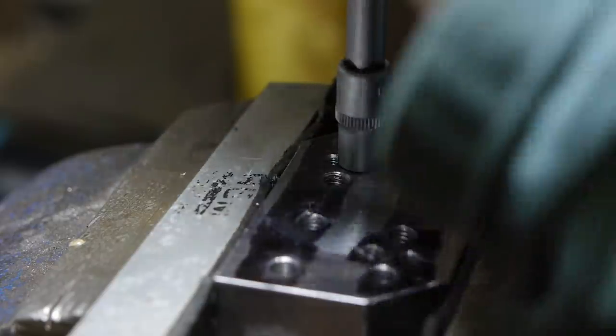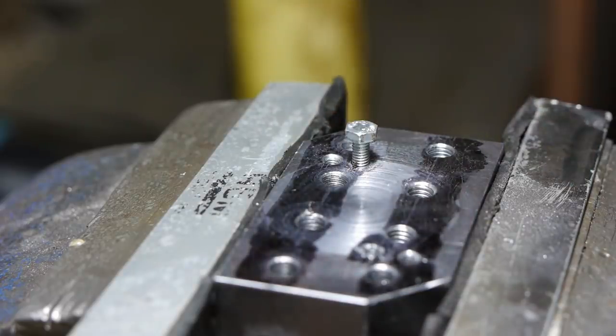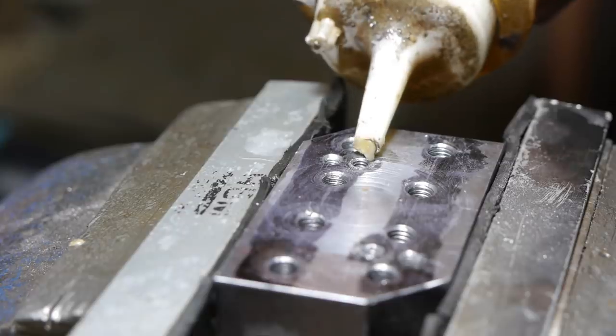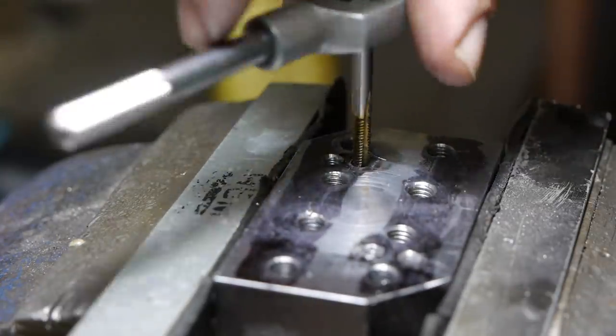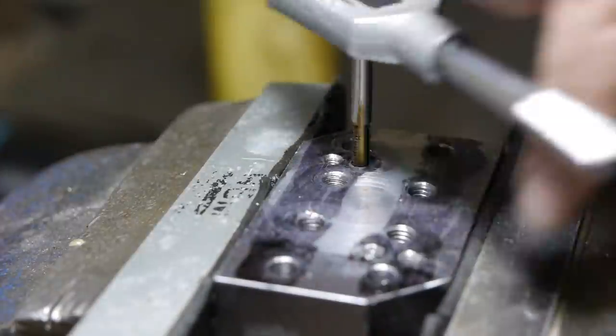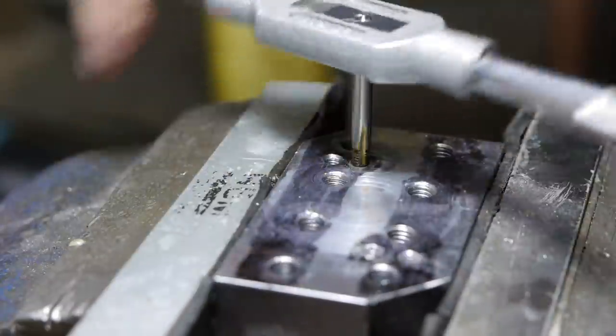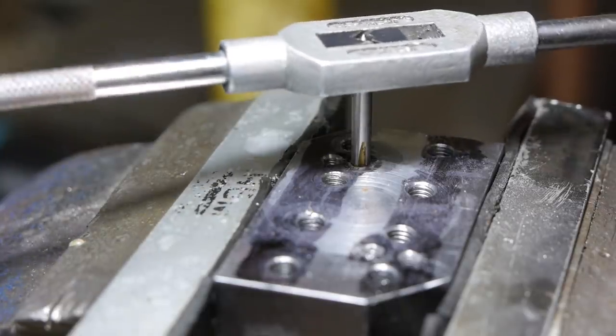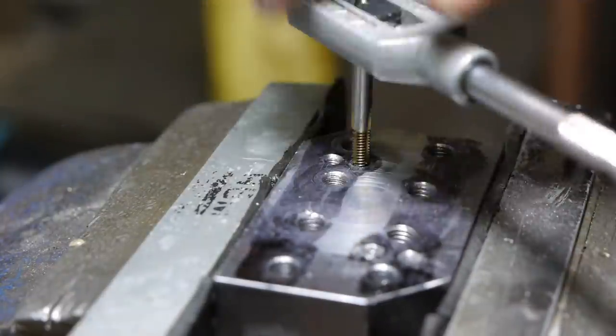It's getting tighter. I think there must be some chips in there. I will run the tap through the hole again. I must say that threading smaller sizes is a lot more difficult than regular sizes like M8 and M10. The tap might not be long enough to thread all the way to the bottom. It won't go any deeper. I might have to countersink these holes.